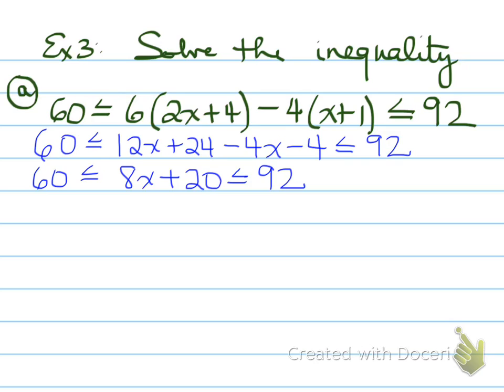When you collect the like terms, you'll find out that you have 8x plus 20 is between 60 and 92. What do we do next? We need to move this plus 20. Where do we move it? Do we move it here? Or do we move it here? Or do we move it to both sides? Your answer is we move it to both sides.